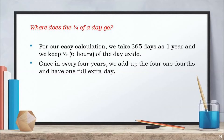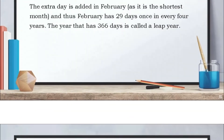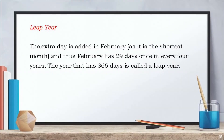Once in every four years, we add up the four one-fourths and we get one full extra day. The extra day is added in the month of February, as this is the shortest month of the year. And thus, February has 29 days once in every four years, and the year that has 366 days is called a leap year.